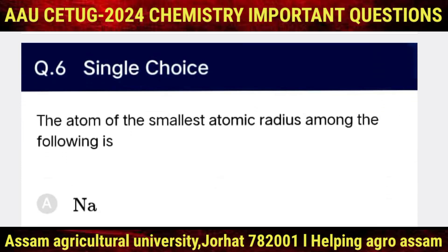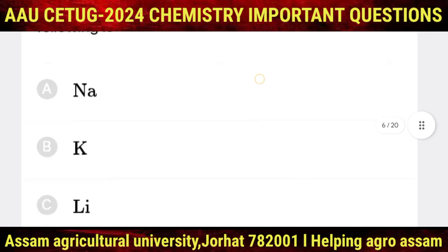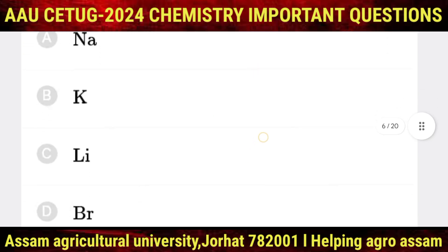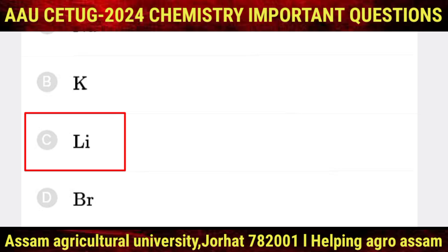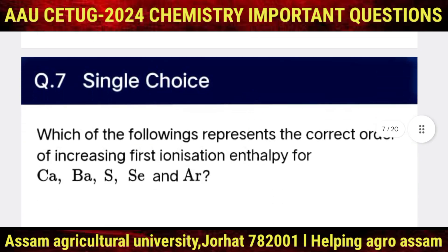Question number 6: the atom with the smallest atomic radius among the following — sodium, potassium, lithium, and bromine — the correct option is C, that is lithium.